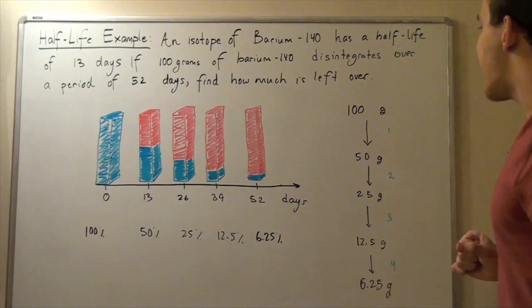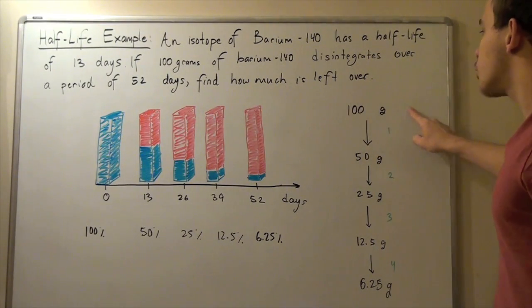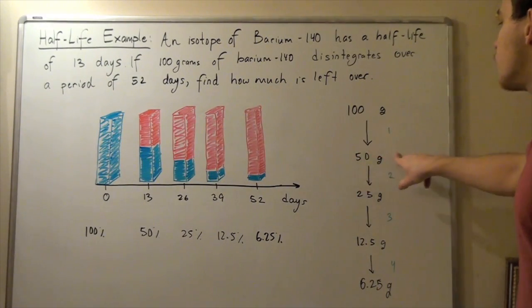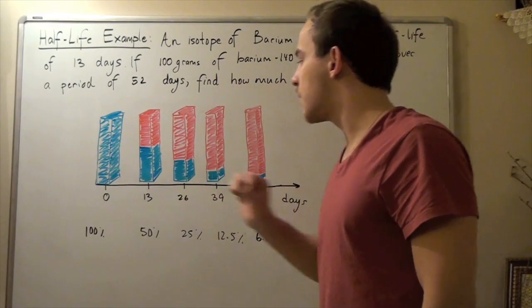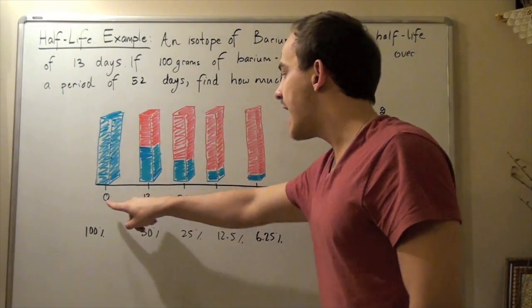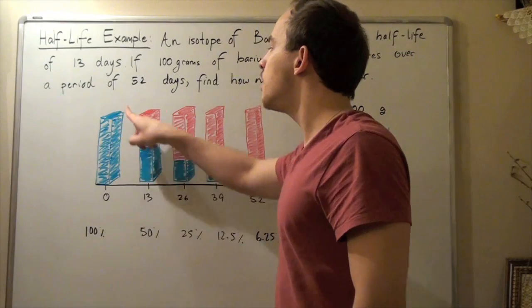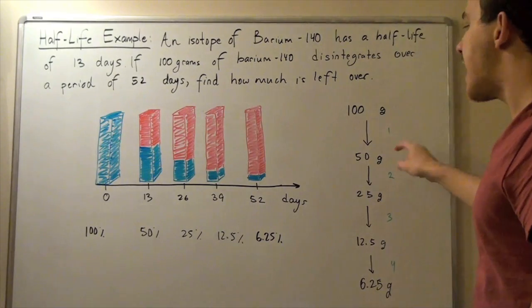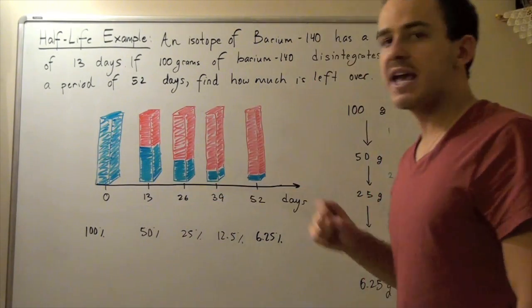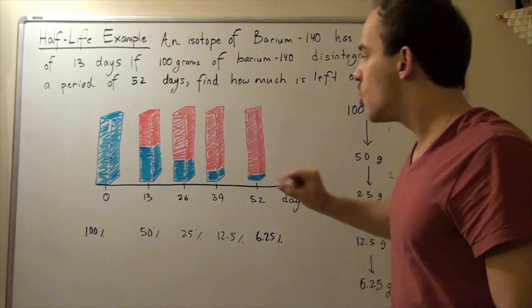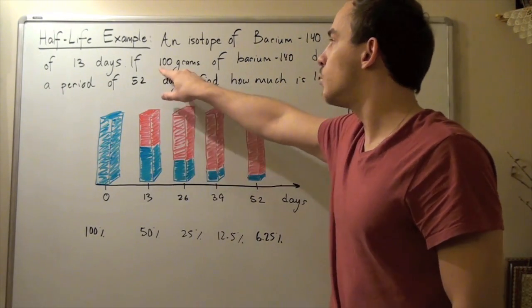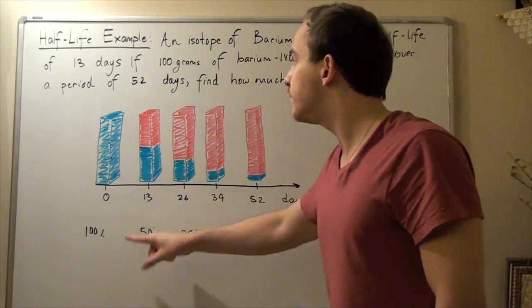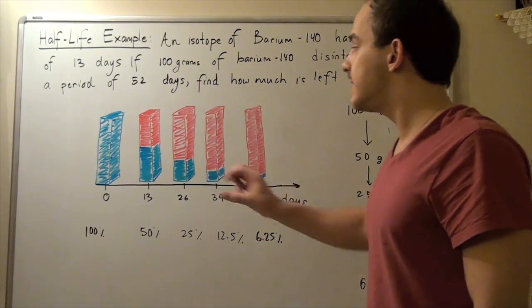So let's see what happens. We begin with 100 grams and after one half-life or 13 days, we have 50 grams left over. So let's look at our diagram here. Initially, at 0 days, we have 100% of our amount, we have 100 grams. What happens after one half-life or 13 days passed by? Well after 13 days, we only have 50% of what was initially given, so we only have 50 grams because 0.5 times 100 is in fact 50 grams.